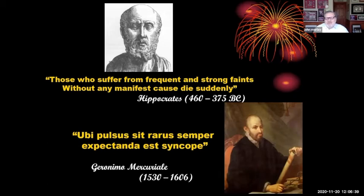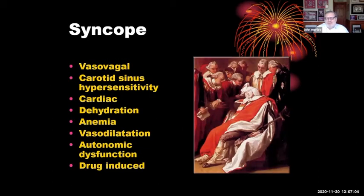Hippocrates pointed out many years ago that those who suffer from frequent and strong faints without any manifest cause die suddenly. The thought that these were not always benign was important. Mercurial pointed out that syncope is associated with a slow pulse. Let's now look at the causes of syncope. There are a large number of them, and that's always the problem — you look and say they had an arrhythmia, but obviously there are lots and lots of causes.